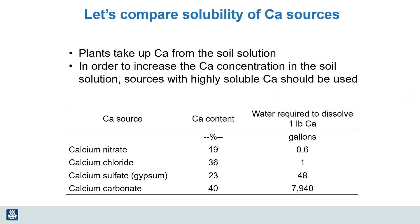Let's compare the solubility of some of these common calcium sources by looking at how much water it would take to dissolve one pound of calcium. For calcium nitrate, it takes less than one gallon of water. For calcium chloride, which is a bit more soluble but contains undesirable chloride, it takes about a gallon of water. It takes 48 gallons of water to dissolve one pound of calcium from gypsum, and almost 8,000 gallons to dissolve one pound from calcium carbonate or lime. Solubility determines how much calcium will be released from these sources — all of which contain significant amounts of calcium.